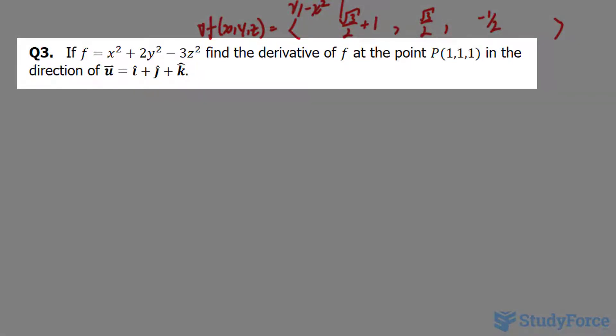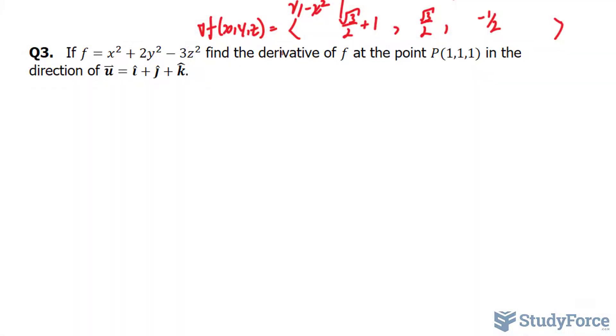We're asked the function f equals x to the power of 2 plus 2y to the power of 2 minus 3z to the power of 2. Find the derivative of f at the point (1,1,1) in the direction of this vector.